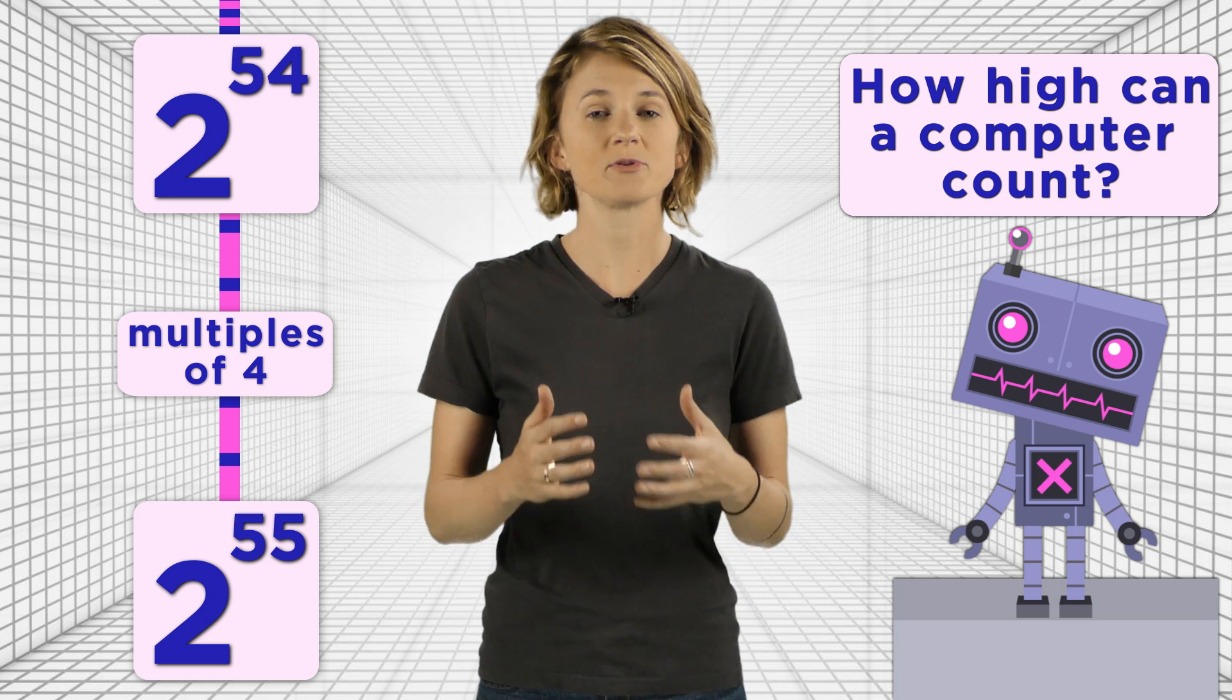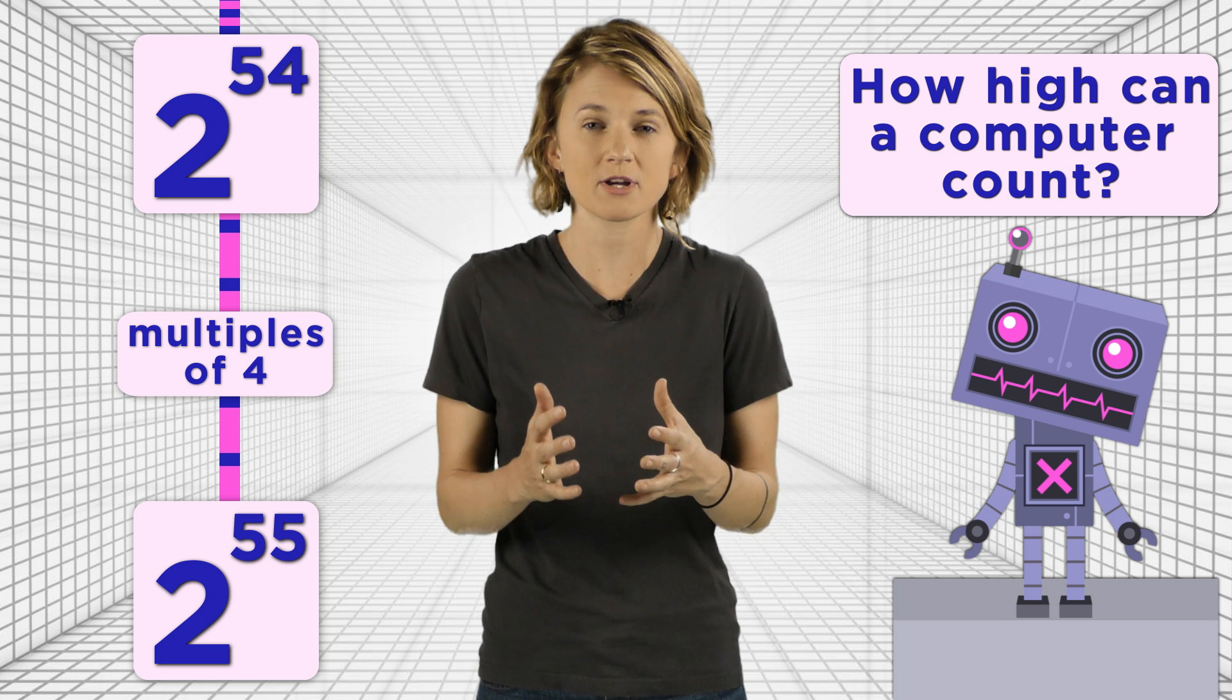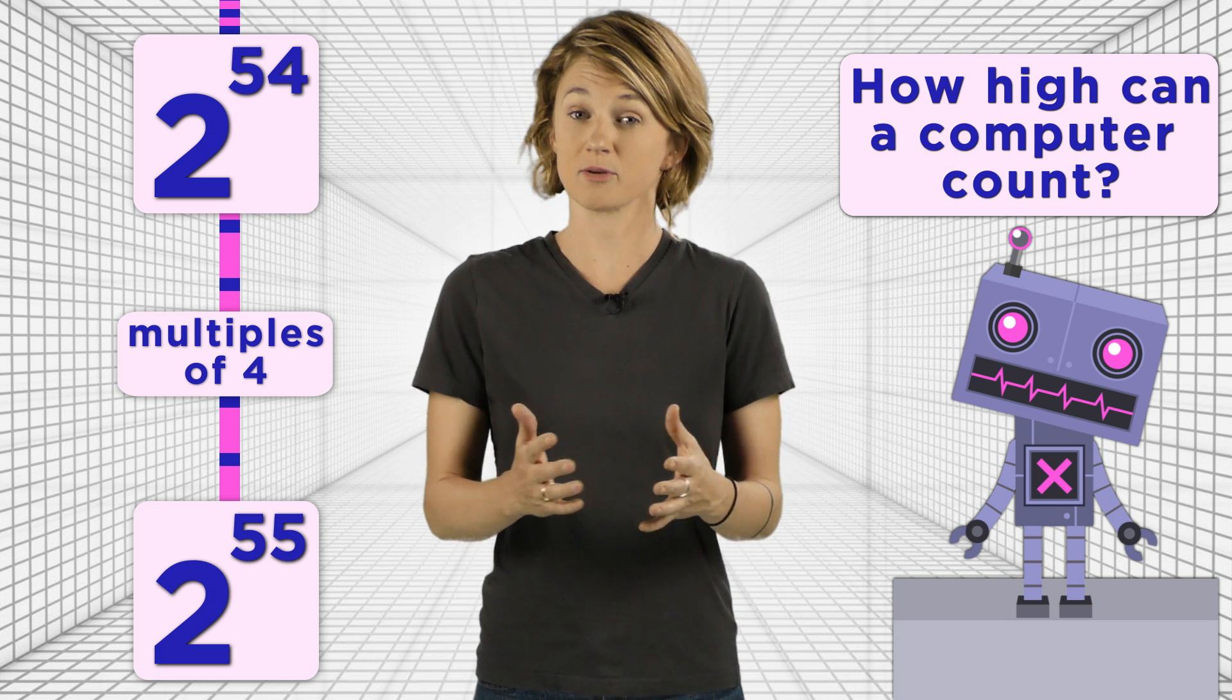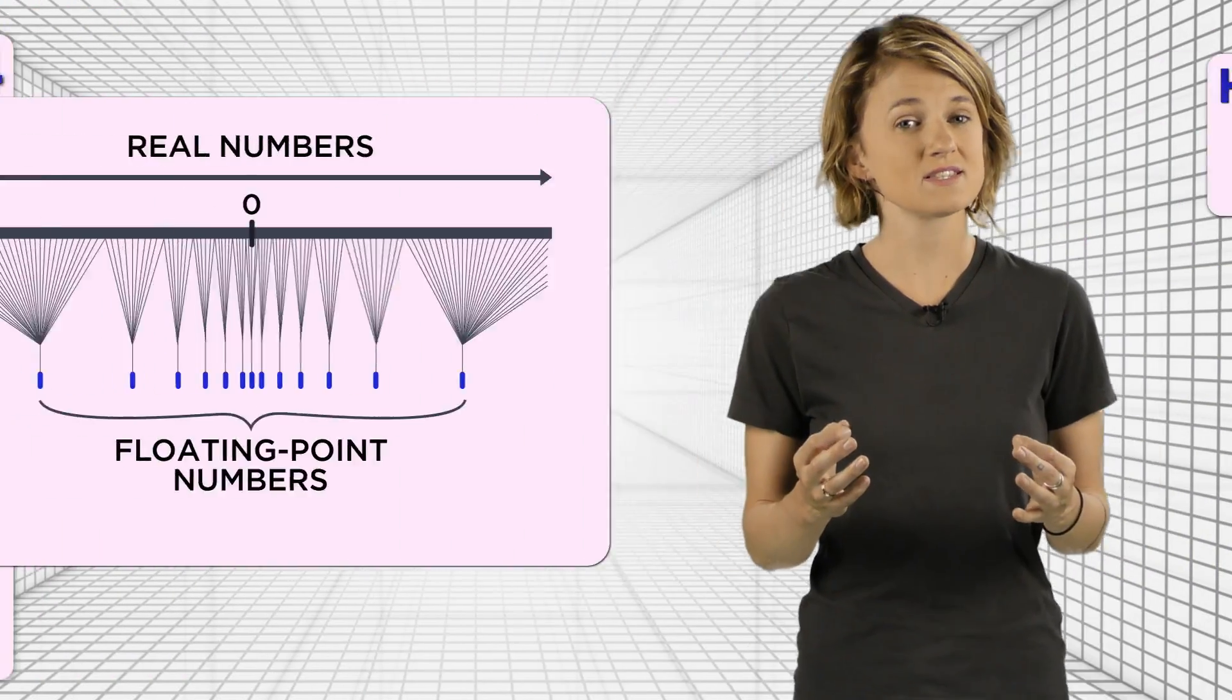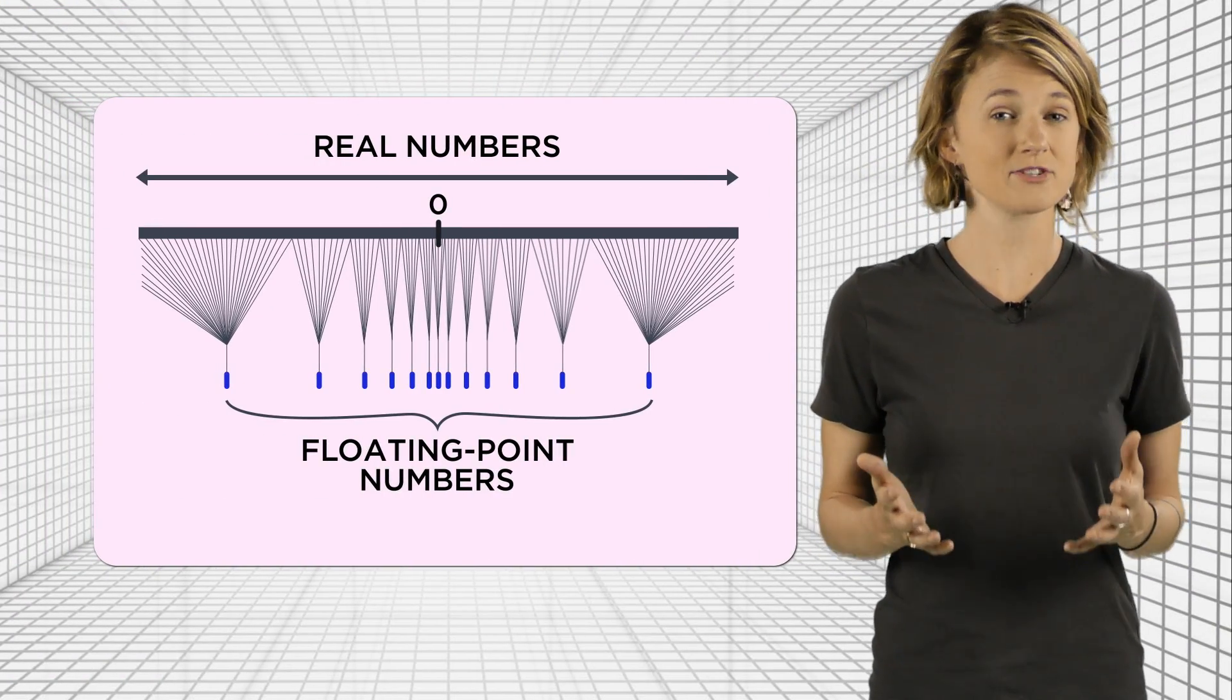The opposite happens near zero. The representable numbers are becoming closer and closer together. That's why, from a computer's perspective, this is basically what the number line looks like.